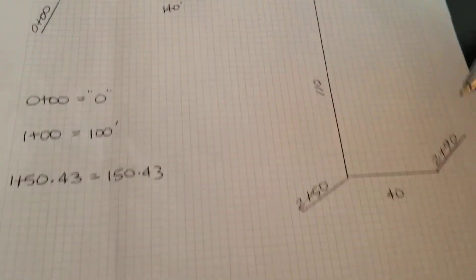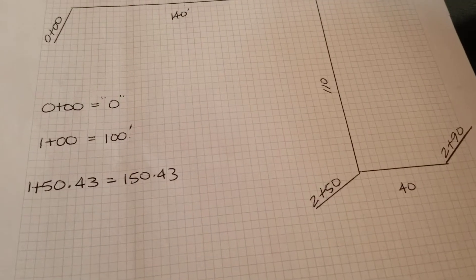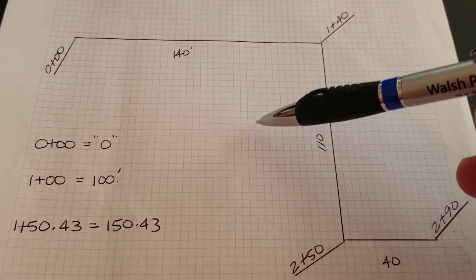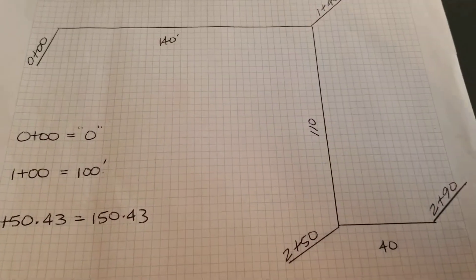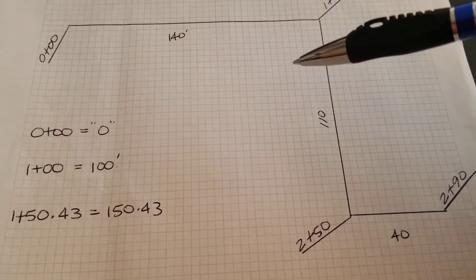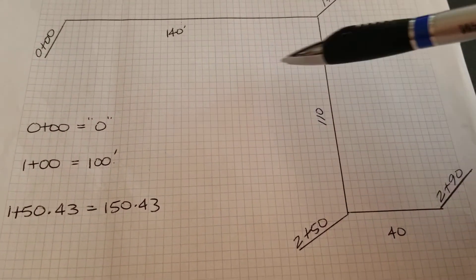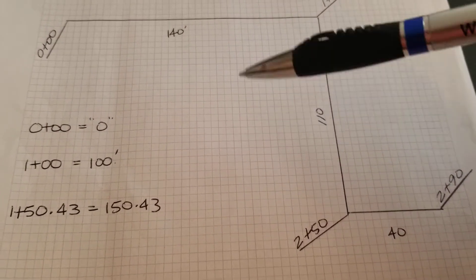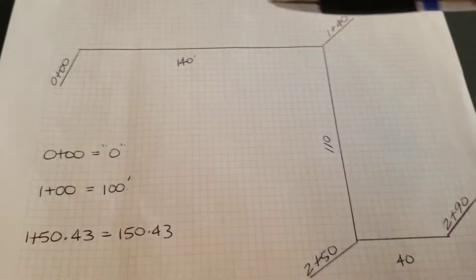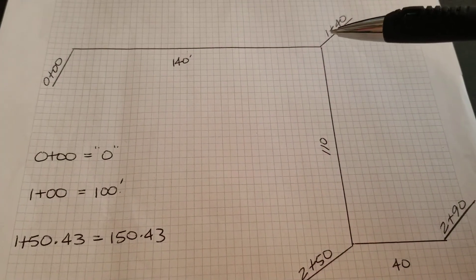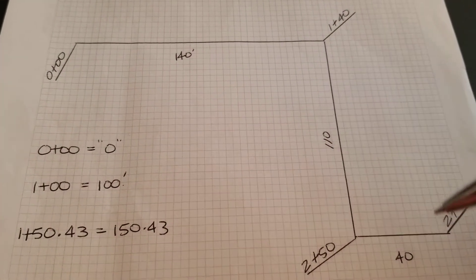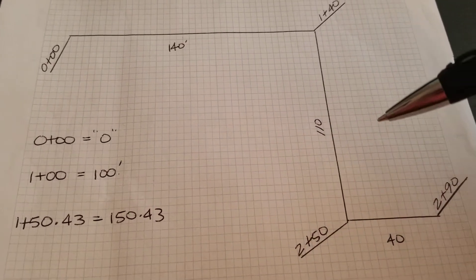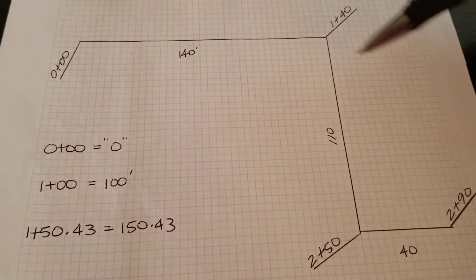And I believe why it's used on plans is that there are so many numbers on that plan, you know, be it a building dimension or an angle or just anything, that it kind of sets it aside to show linear length. So instead of like on a, let's say this was curb.